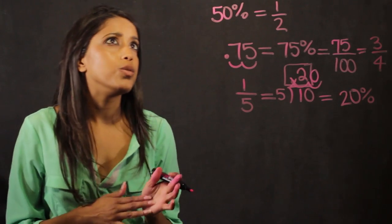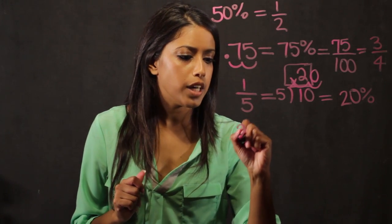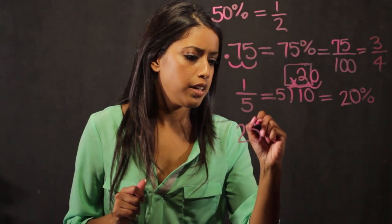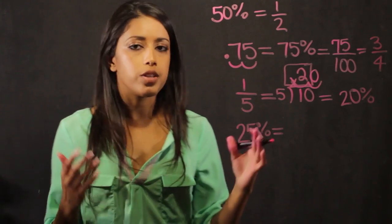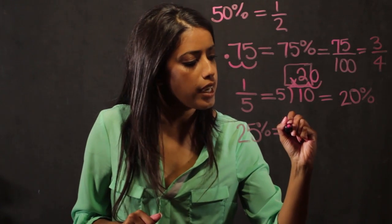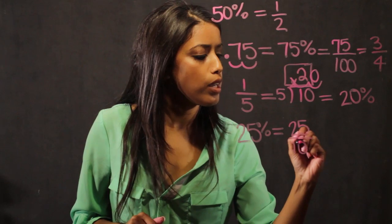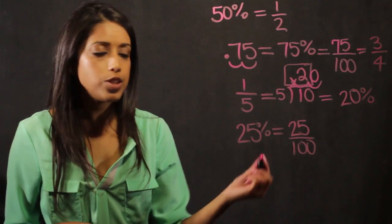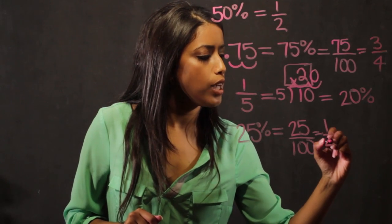Let's go ahead and do one final example. Let's take 25% and let's convert it. So we're beginning with the 25%. And let's say we want to convert that to a fraction. When it's already in percentage form, we just take it and we put it over 100. So this becomes 25 over 100. And when we reduce, we know that 25 goes into itself one time and it goes into 100 four times.